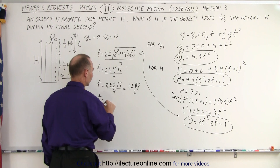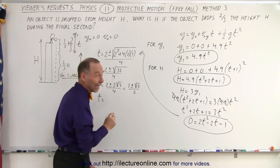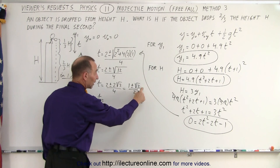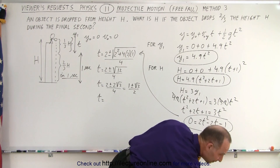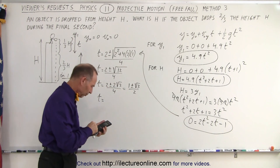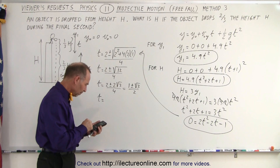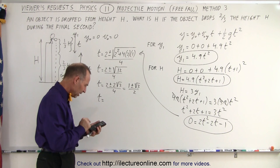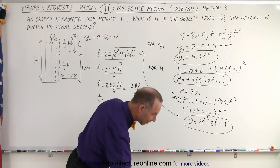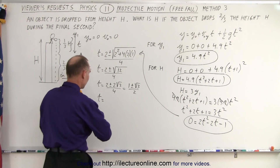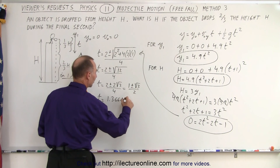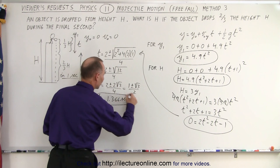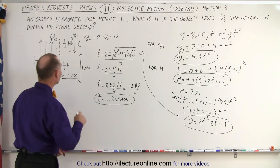Since the square root of three is greater than one, the minus solution gives a negative number, and we can't have negative time. So we take the positive solution: t equals (1 plus the square root of 3) divided by 2, which equals 1.366 seconds. That should be a familiar number if you watched the other two videos.